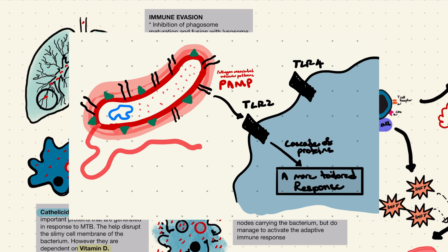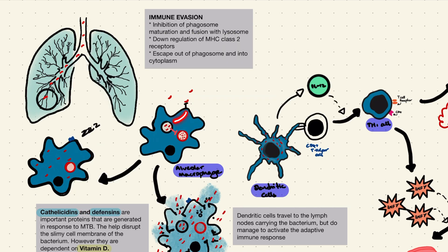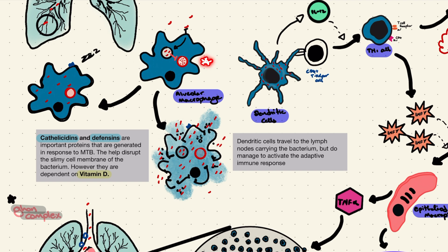Normally, the phagosome is fused with the lysosome to digest the bacterium — if this happens, the infection is cleared. However, TB has a few tricks up its sleeve. It usually blocks the fusion of the lysosome and phagosome, interferes with MHC class 2 antigen presentation to delay the adaptive immune response, and the bacteria may even escape the phagosome altogether and live undetected in the cell's cytoplasm.